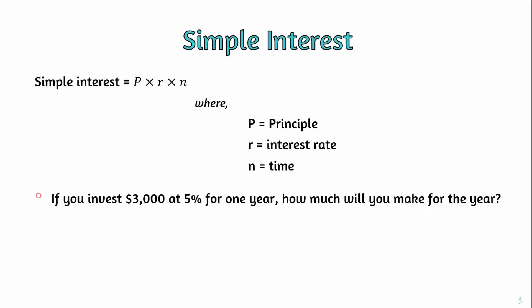For example, if you invest $3,000 at 5% for 1 year, how much will you make for the year? We know the three factors: the principal amount, the real interest rate, and the time. The principal is the amount, the interest rate is 5%, and the time is 1 year.